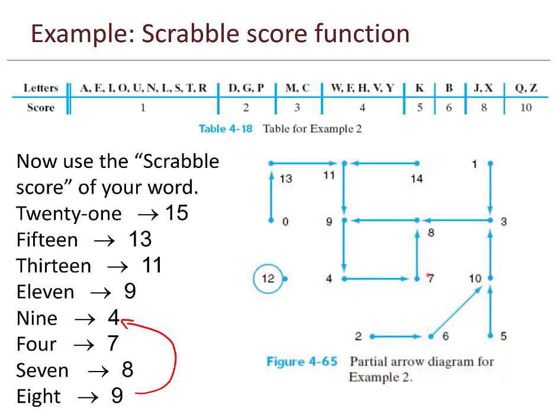Here's the arrow diagram for the Scrabble score function. So here's that loop, the 9, 4, 7, 8. Also, it's kind of interesting, 12. The number 12 is just the number 12. When a number loops back on itself like that, we call it a fixed point under the function. So the function evaluated at 12 gives you 12. The number 12 is fixed.